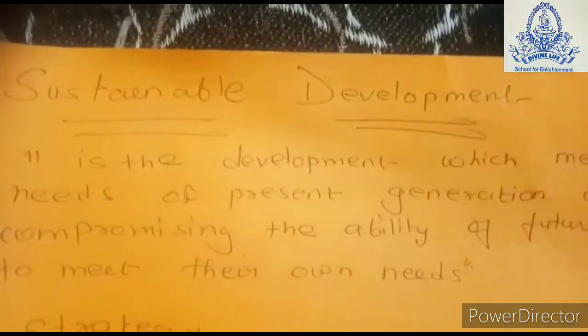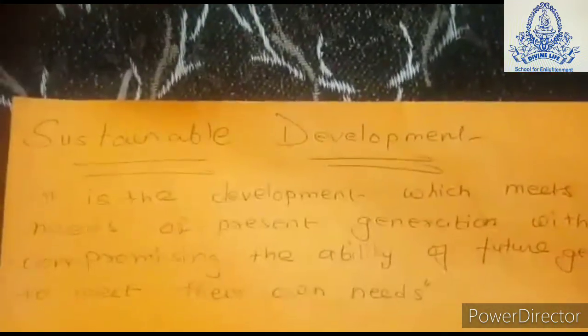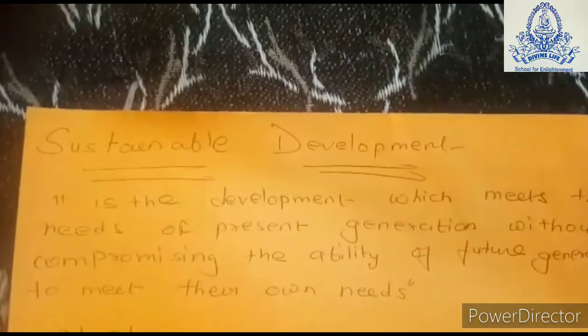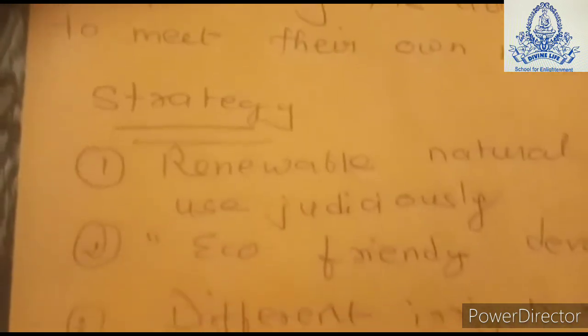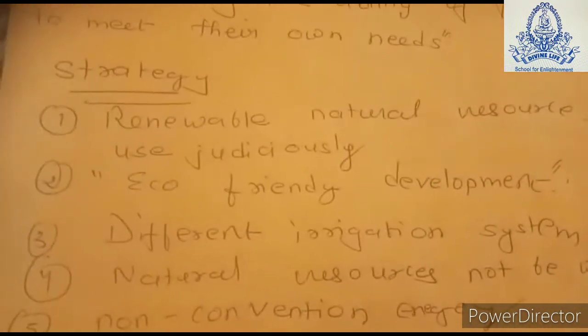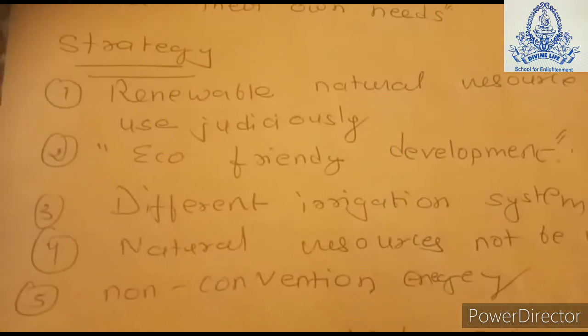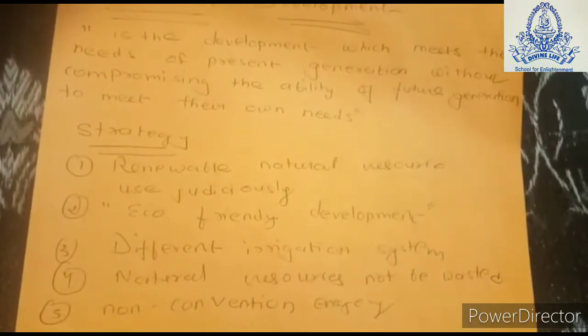There is a decrease in natural resources due to economic development and their quality is also being destroyed, so sustainable development helps address this. The first strategy is that renewable natural resources like cultivable farmland, forests, and water resources should be used in such a way that their quality is maintained, while non-renewable natural resources like coal, petroleum, and minerals should be used in a very judicious manner.